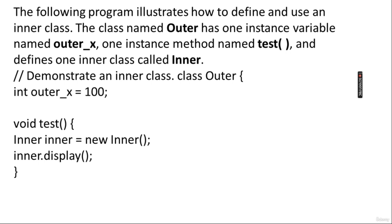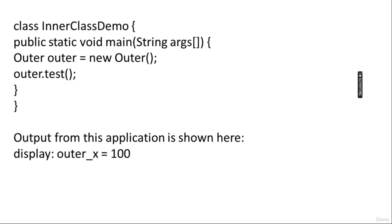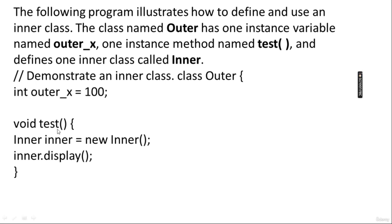Now we will see one program to define and use an inner class. The class named 'Outer' has one instance variable named 'outerX', one instance method 'test', and defines one inner class called 'Inner'. In the test method, an instance of Inner is created and its display method is called. The inner class has one method, 'display', which prints 'outerX = outerX'.